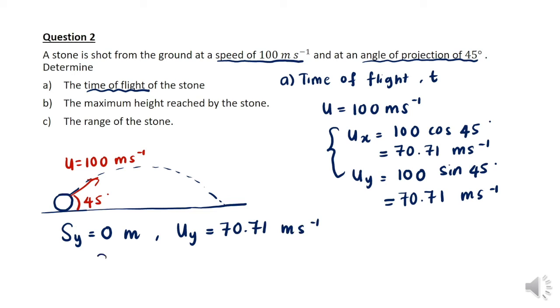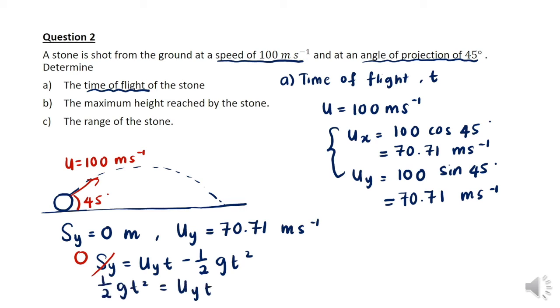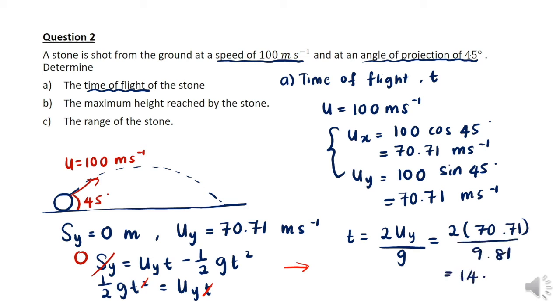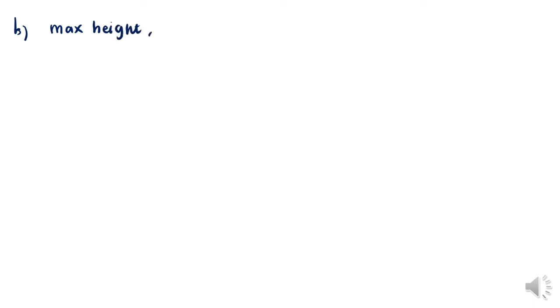Since the object returns to its initial launch height, sy equals zero meters. We apply sy equals uy·t minus half·g·t², which gives t equals 2·uy divided by g. Substituting all values, we get t equals 14.42 seconds for the time of flight.